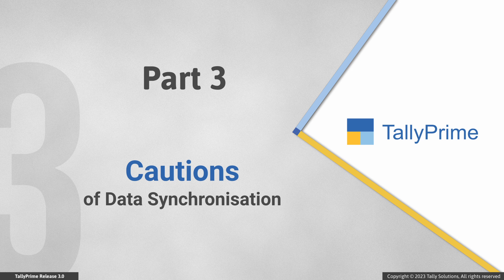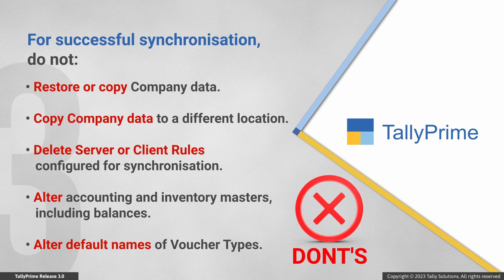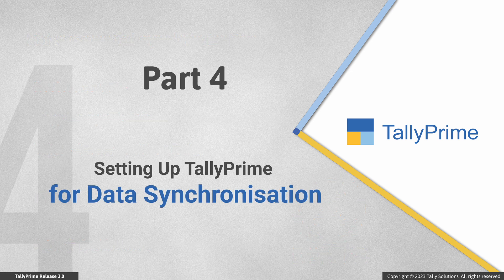Now let us see cautions of data synchronization. There are some things that should not be done before or during synchronization. These include: restoring or copying company data to implement synchronization at multiple locations; copying the company data to a different location; deleting server or client rules as configured for synchronization; altering accounting and inventory masters including the balances; and altering default names of voucher types. When you alter a master name or balance during synchronization, Tally Prime does not identify the master and therefore the synchronization will not be successful.